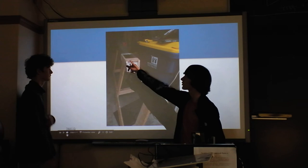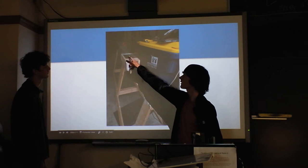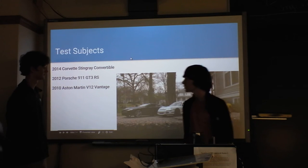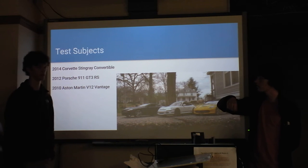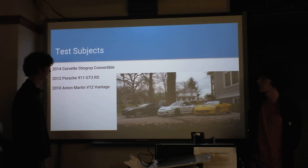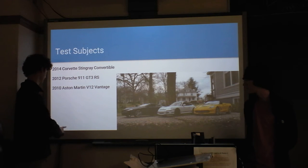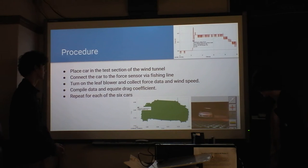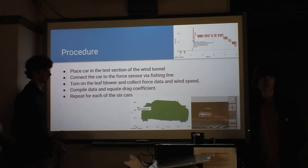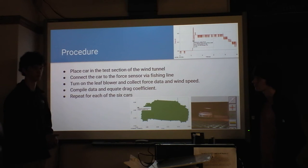We had a little slot cut out on the acrylic sheet so we could stick our anemometer — the wind speed meter — down into the tunnel to measure wind speed. We conducted the experiment by putting the car in the wind tunnel, hooking up the force sensor, and then turning on the leaf blower. We recorded the wind speed and the force the car was undergoing, then used those two values to find the drag coefficient.